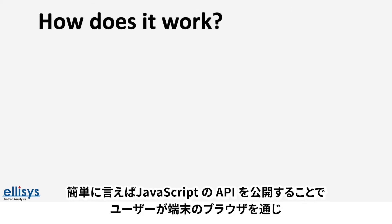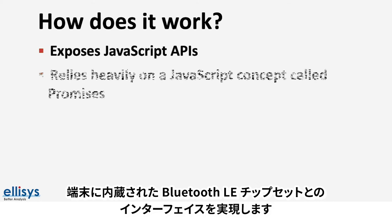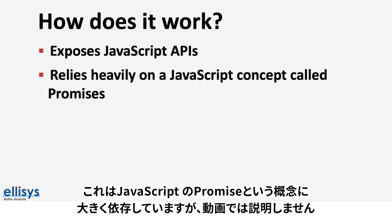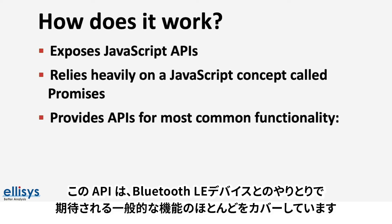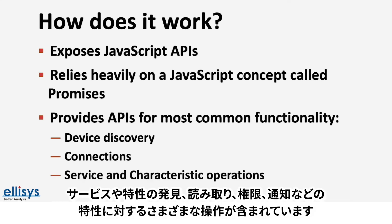So how does web Bluetooth work? Simply, it exposes JavaScript APIs that allow the user to interface with the Bluetooth Low Energy chipset embedded in the device through the browser. This relies heavily on the JavaScript concept called promises. The APIs provided cover most of the common functionality you would expect for interacting with a Bluetooth Low Energy device. This includes device advertisement discovery, connecting to devices, discovering services and characteristics, as well as performing different operations on the characteristics including reads, writes, and notifications.